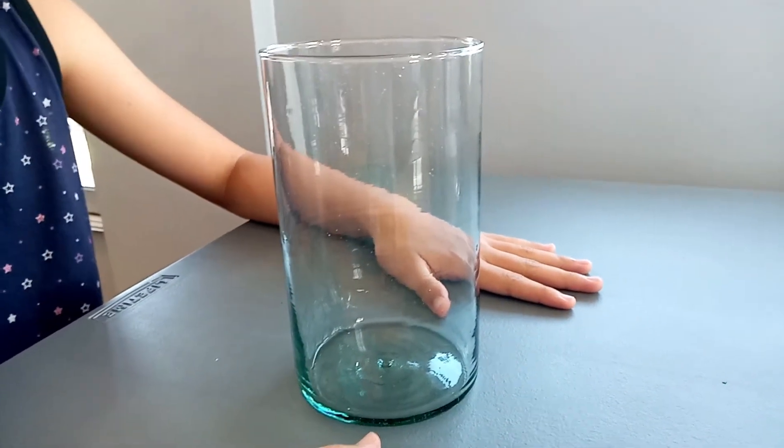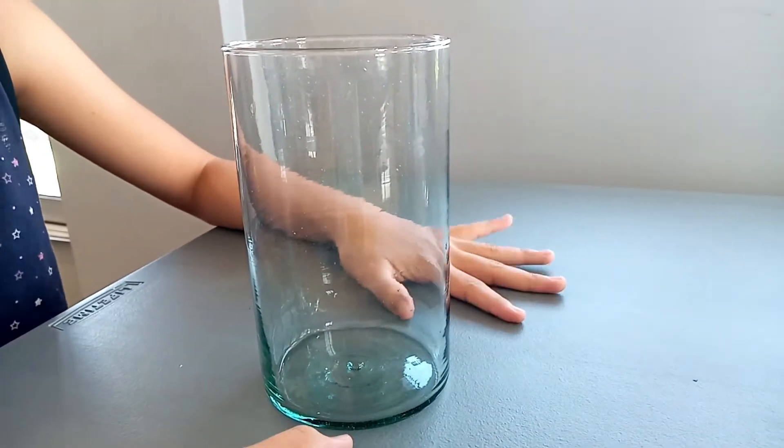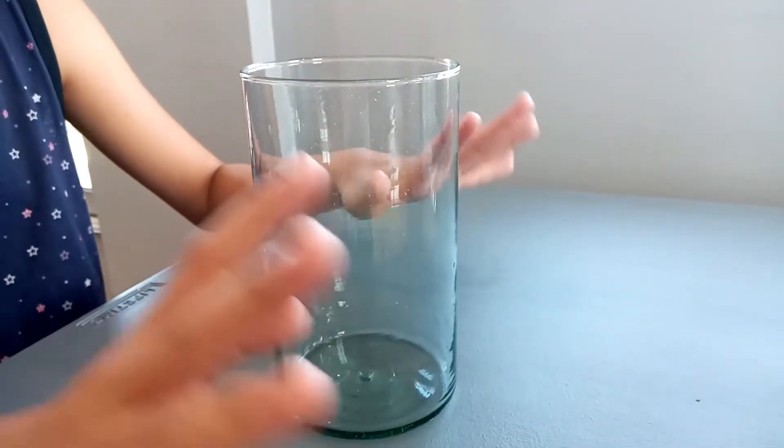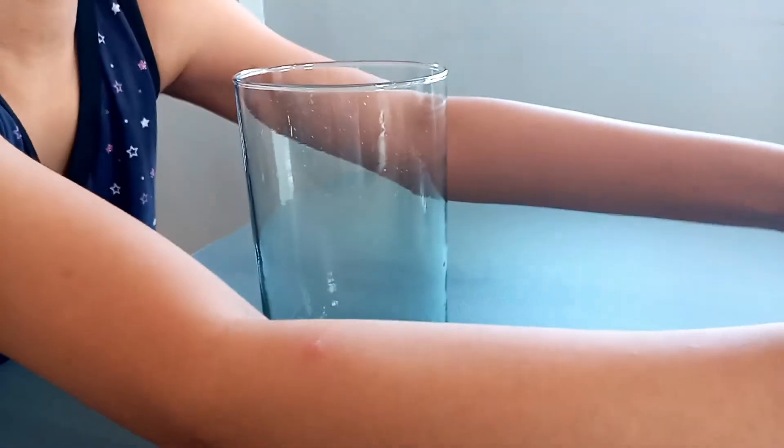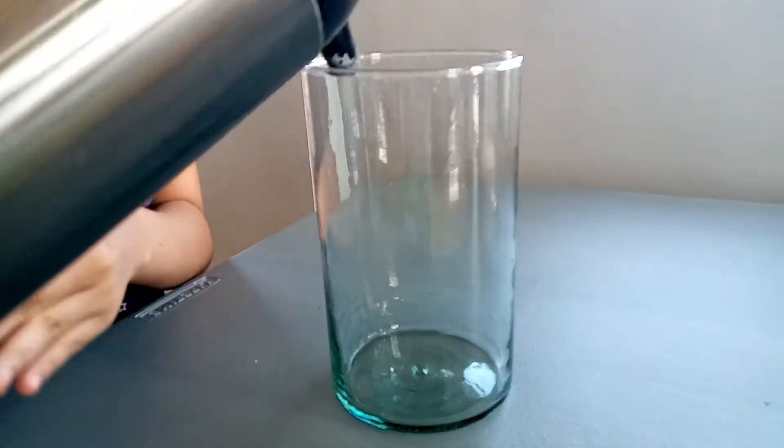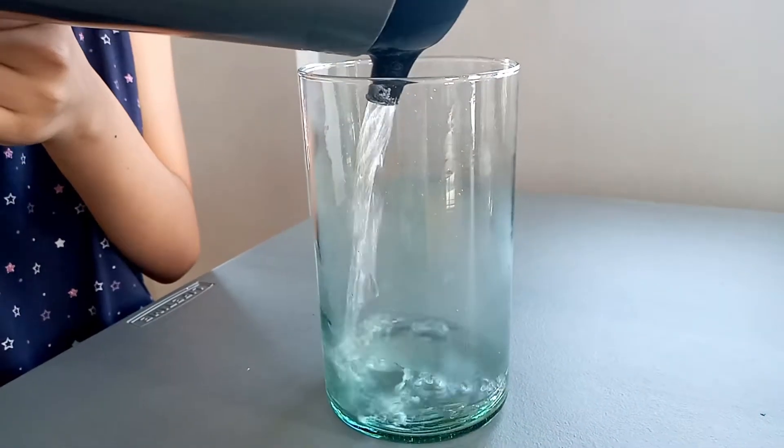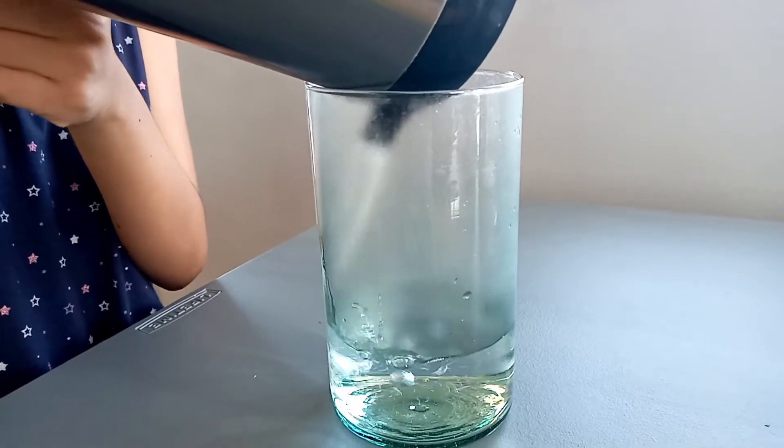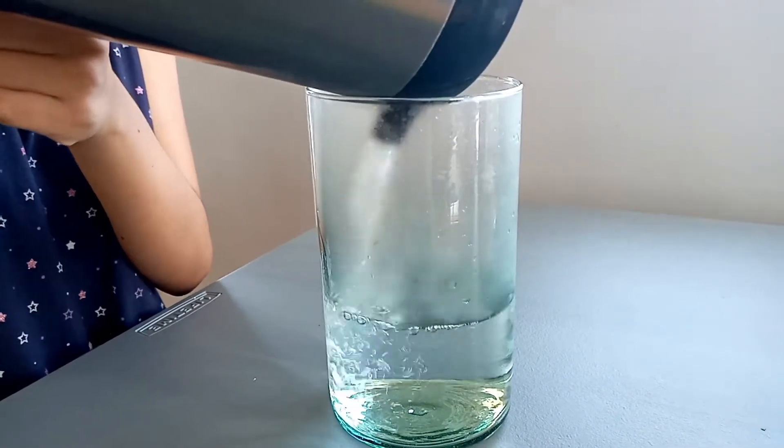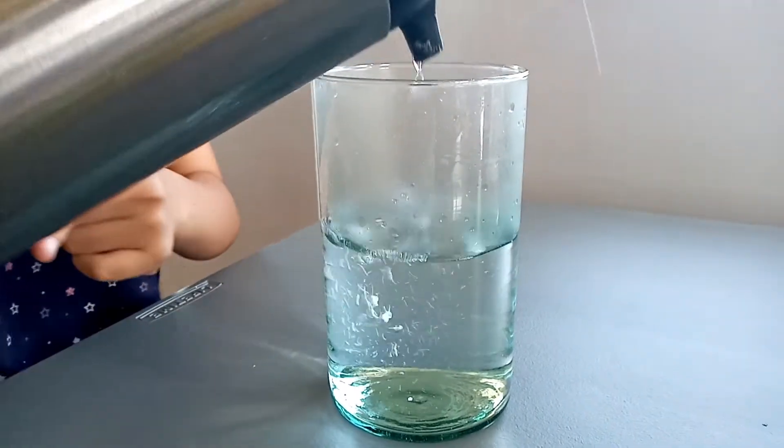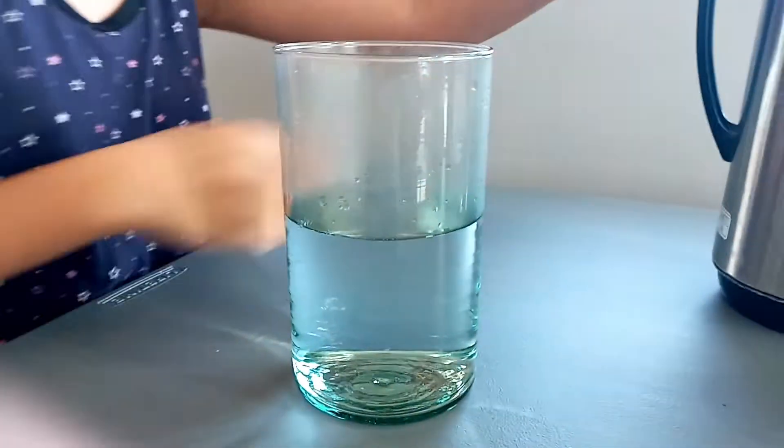Hello, today we're going to be making an experiment about how rain is formed. First let's make the sea. Here I have my hot water, it needs to be hot because the Sun is hitting the sea. Let's add our hot water, you need to add it probably halfway there, so that's probably enough.